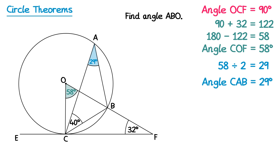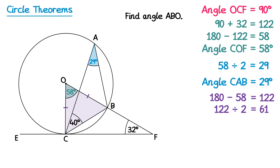Next we're going to look at the smaller triangle COB. It's useful to notice that OC and OB are both radii of the circle, meaning they're the same length. This means triangle COB is an isosceles triangle, so two of the angles must be the same. If we subtract 58 from 180 we get 122, and if we halve 122 we get 61. This means both base angles in that isosceles triangle must be 61 degrees. The one important to us is angle OBC, so angle OBC equals 61 degrees.